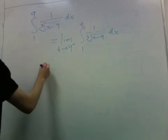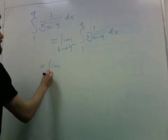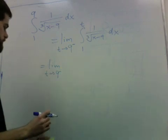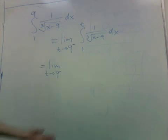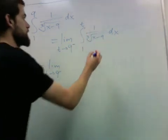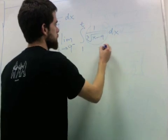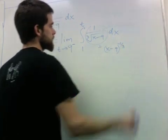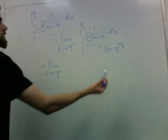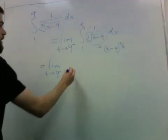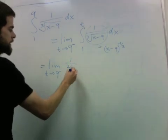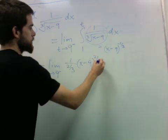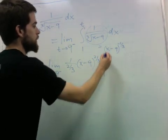So we can just evaluate this. An antiderivative of this, well let's rewrite it as x minus 9 to the negative one third. So an antiderivative, add 1 to the exponent and divide by that. So I get 1 over 2 thirds, x minus 9 to the 2 thirds, from 1 to t.